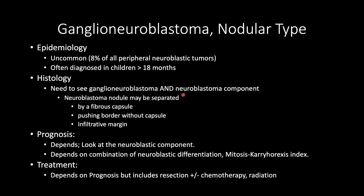Ganglioneuroblastoma nodular type is uncommon, representing around 8% of all peripheral neuroblastic tumors, and is often diagnosed in children greater than 18 months. Histologically, you need to see a ganglioneuroblastoma or ganglioneuroma component alongside a neuroblastoma component. That neuroblastoma nodule may be separated by a fibrous capsule, a pushing border without capsule, or an infiltrated margin. Prognosis depends on the neuroblastoma component — how differentiated it is and the MKI. Treatment depends on prognosis accordingly.